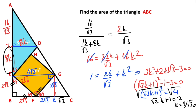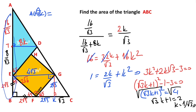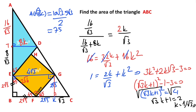That means 3k equals root 3, and 8k must equal 8 over root 3. Now we can easily calculate the height of the triangle ABC. The height of triangle ABC equals — notice the sum of these lengths — 10 root 3 times 5 root 3 over 2, so the area of triangle ABC is going to be 75 centimeters squared. Thanks for watching — if you want more videos like this, please don't forget to like and subscribe to my channel. Take care and bye bye.